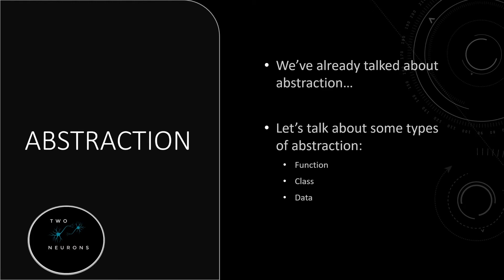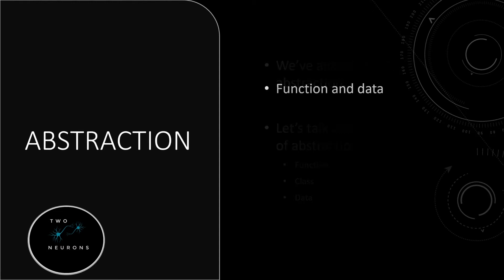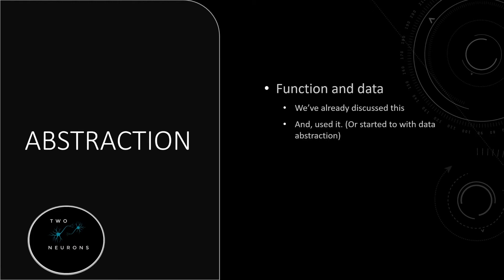Some types are function, data, as we're already aware, and class-based abstraction. Now we're going to review function and data real quick, and then focus on class-based abstraction. Function and data are things we've already discussed, as I've said a couple of times now, and we've already used it.